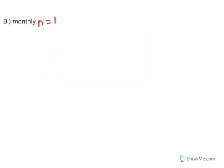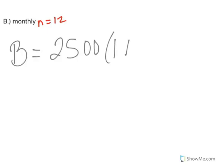Recall that monthly means n is 12. So my balance is 2500 times 1 plus my rate of .047 divided by 12, and then I'm going to take it to the 12 times 1 power. Because, again, it's only one year. That's where that gray 1 comes here in my exponent. So 12 times 1 is just 12.